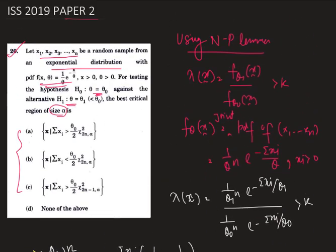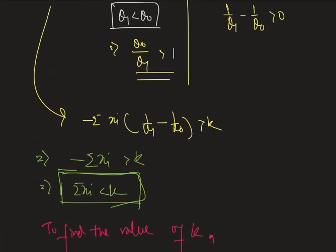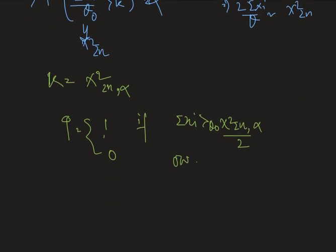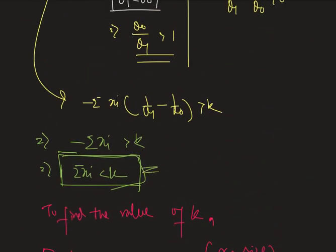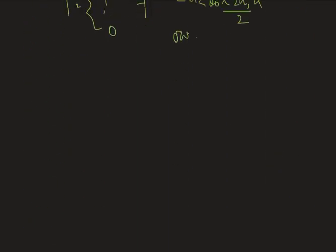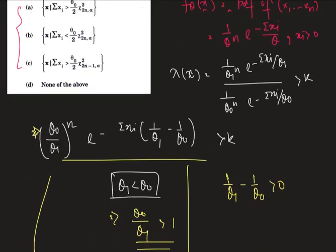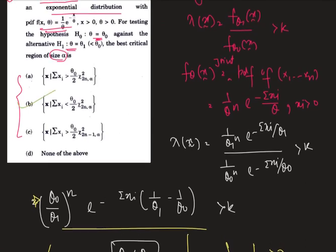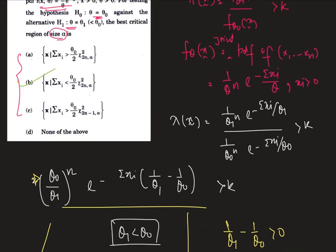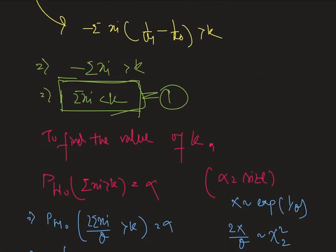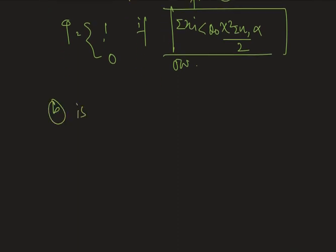Sorry, it must be less than k, because the critical region is less than k. From this we get the critical region. So the correct answer is option B, that is sum over xi less than theta naught divided by 2, times chi-square(2n, alpha). That's all for today, thank you very much.